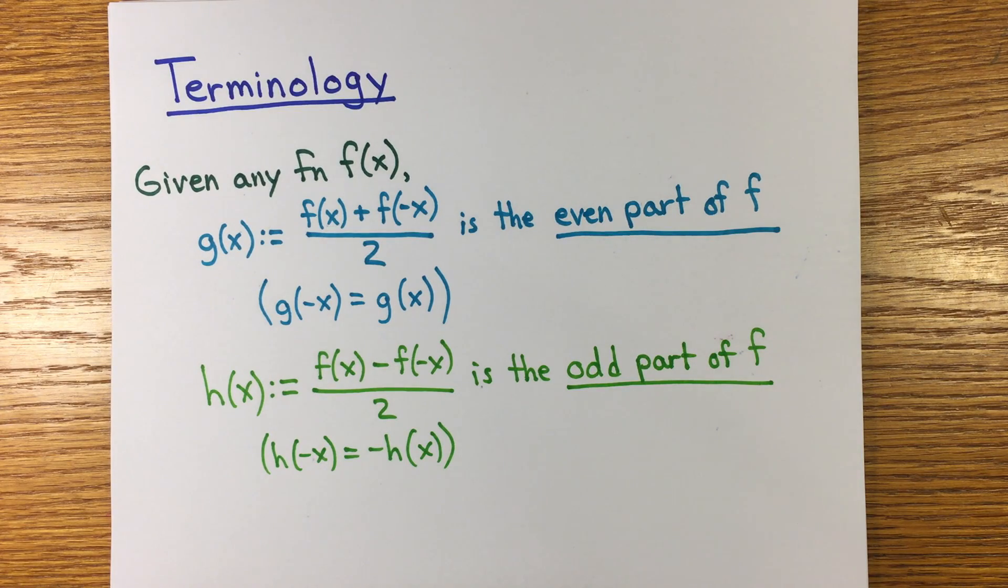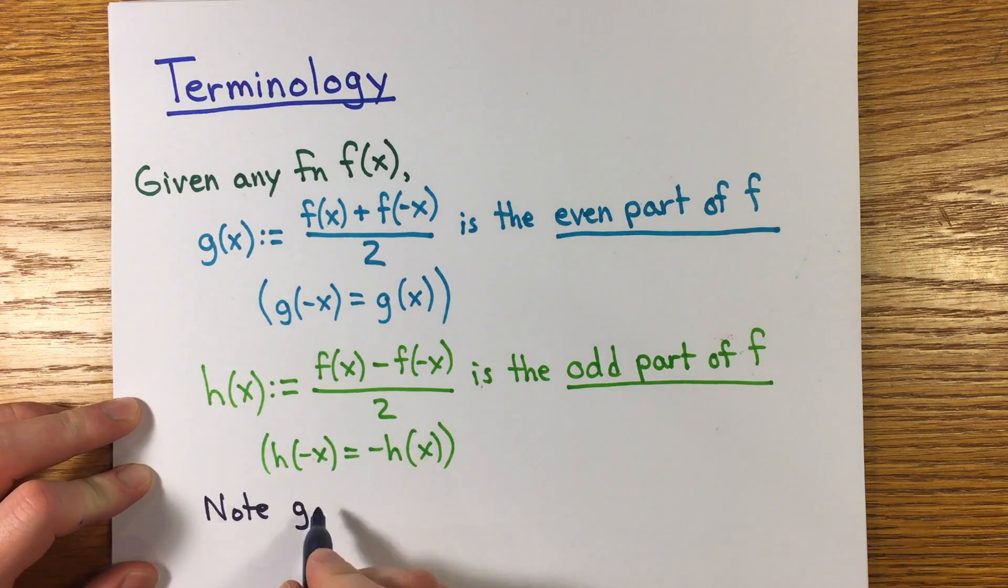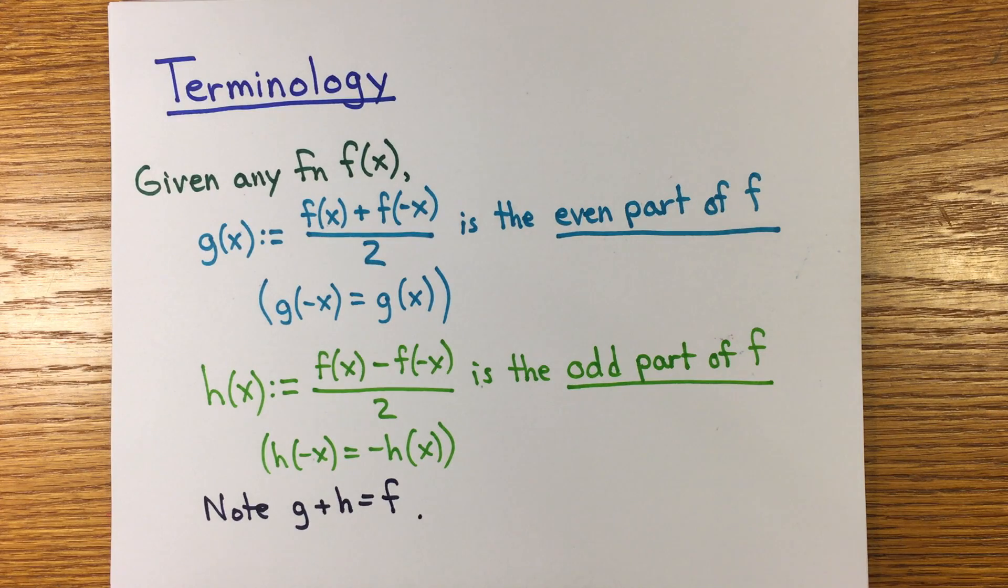These are projections onto even and odd functions that sum to f. So all we've done to this point is give new names to the even and odd parts of the exponential function.